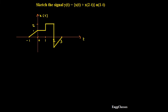Hello everyone, welcome to NG Classes YouTube channel for a video lecture series on signals and systems. In this video lecture we will consider sketching the given signal Y of t. Y of t is given as X of t plus X of 2 minus t into U of 1 minus t. X of t is given something like this which exists from minus 1 to plus 3. We need to add this signal with X of 2 minus t, so first we will understand what is X of 2 minus t.